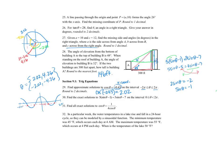Sine theta corresponds to the y-coordinate on the unit circle. When is sine theta equal to negative 1? The y-coordinate is negative 1 only at the bottom of the unit circle. There's only one such place on the interval from 0 to 2 pi, and that corresponds to 3 pi over 2.